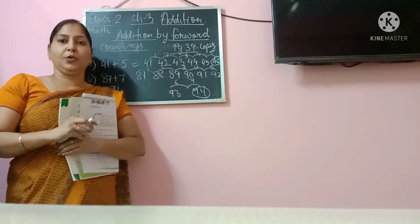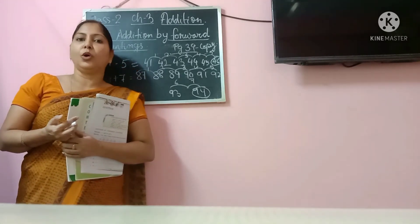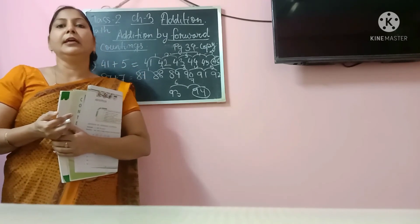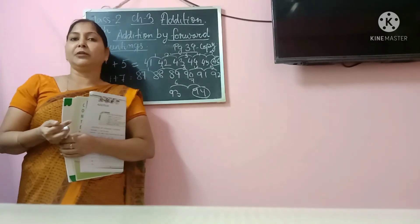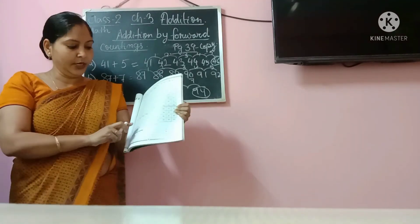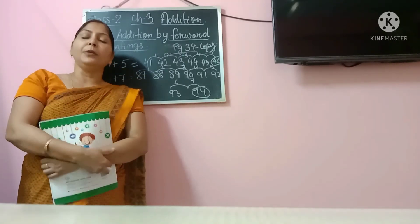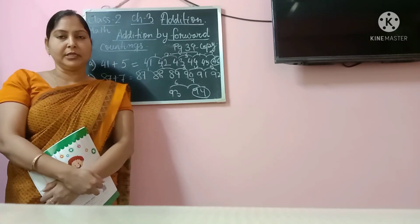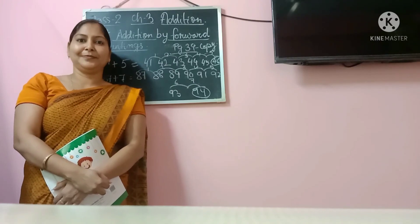So if there are many pages — five or six pages — please make a single PDF file and send your work. So your work is to do page number 38 in the book and page 39 in the copy. The grid you will not do — only the 'add by forward counting' section at the bottom you have to do in the copy. Keep doing this practice at home, and if you have any doubt, please let me know through Telegram or through the comment box. Take care, bye bye and good day.